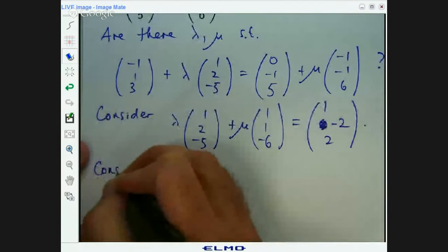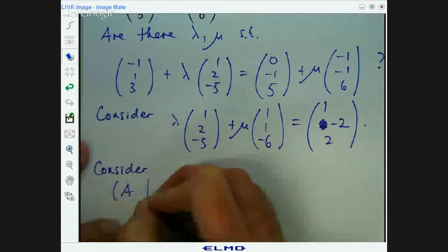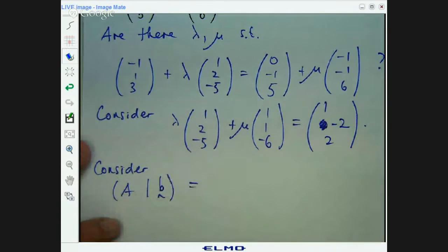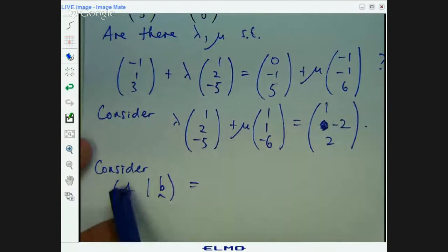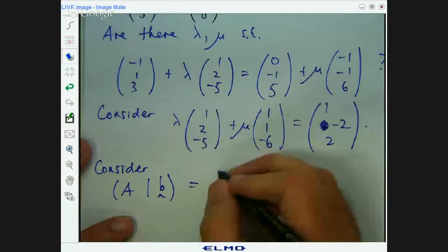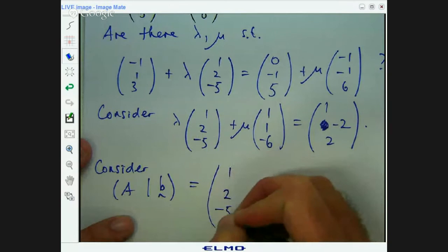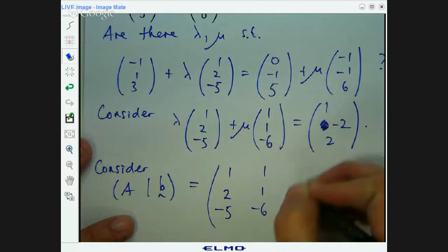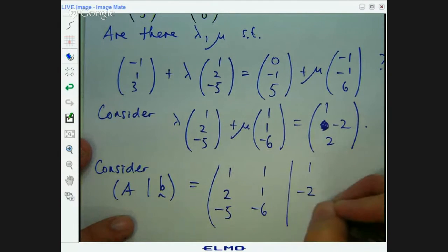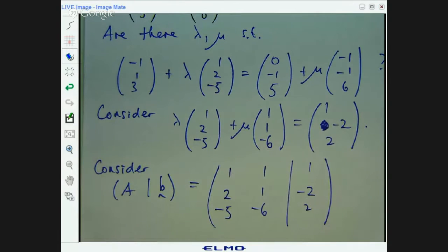We can transform this into augmented matrix form. Let's consider the following augmented. B is this vector here, A is just this and this written as columns. Great. Now we're at a familiar part in this series of videos. We can row reduce that.